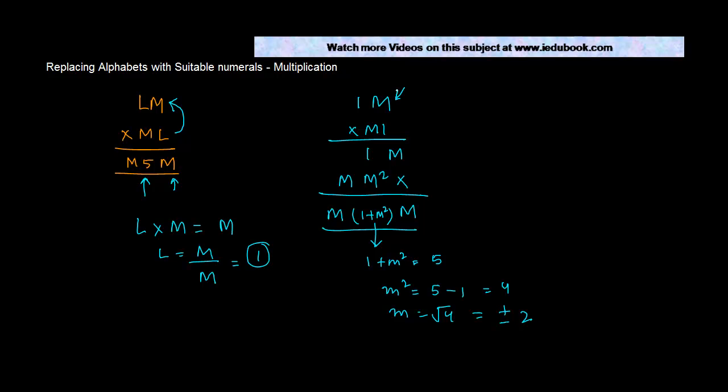But because this is a digit, so it cannot have a minus value. So we just rule it out. So M is equal to 2. So then basically my number becomes 12 into 21, and the answer will be 252, which is this number.